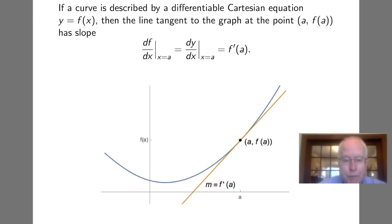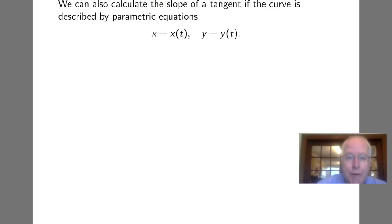We see that in the picture here. The curve y equals f of x in blue and the tangent line in orange. Of course, once you have that tangent line slope and you know the point of tangency, it is expected that you'll be able to find the equation for that tangent line.